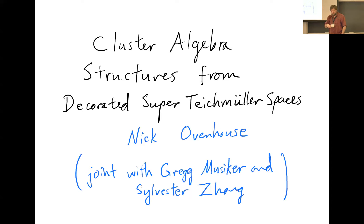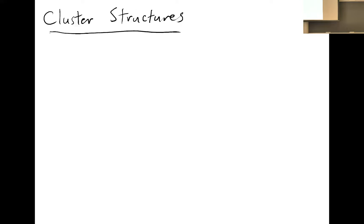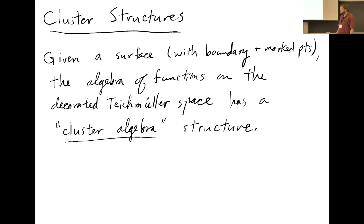This talk will be very related to what Anton was just talking about in the first talk. As I said, it says 'cluster structures' but I'm not going to say what a cluster algebra is — I'll just say that they exist for the situation we're interested in. If we have a surface, usually with boundary and marked points, then this decorated Teichmüller space that Anton was talking about, with coordinates given by lambda lengths, has a cluster algebra structure.